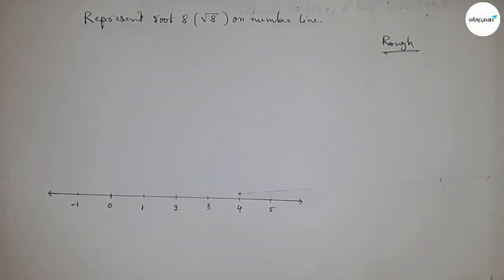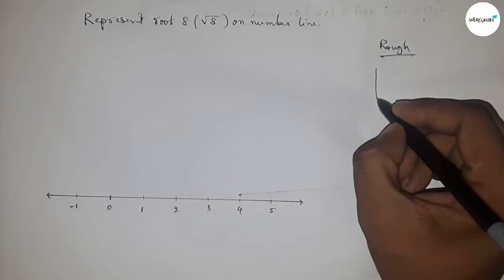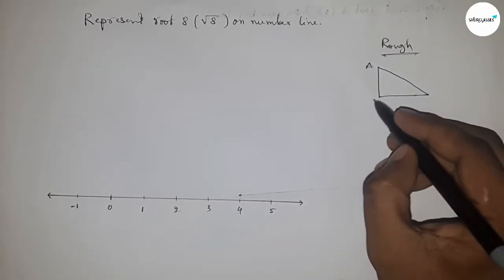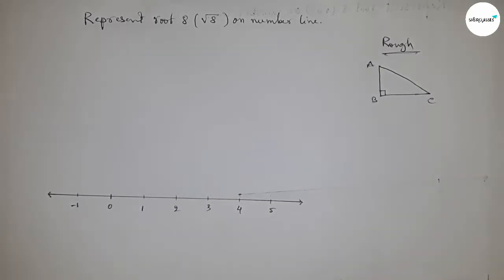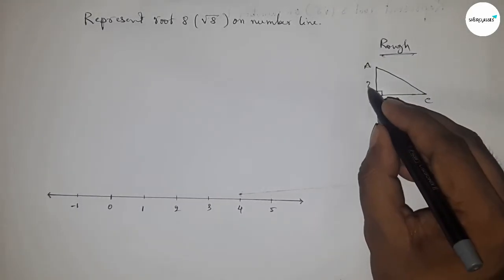Now, roughly discussing the calculation of root eight. If there is a right angle triangle ABC with base two unit and height two unit, then what is hypotenuse?